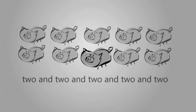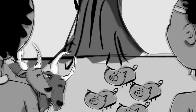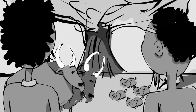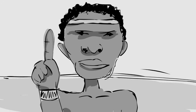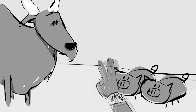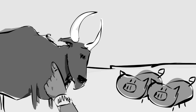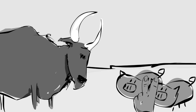This tribe would not do financial transactions involving numbers greater than two. For example, they would not trade two cows for four pigs. Instead, they would trade one cow for two pigs and then, in a second transaction, trade another cow for another two pigs.